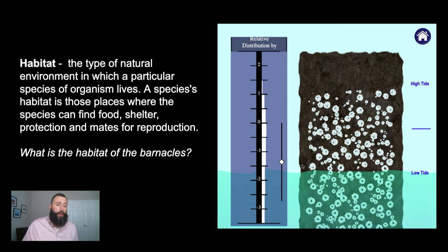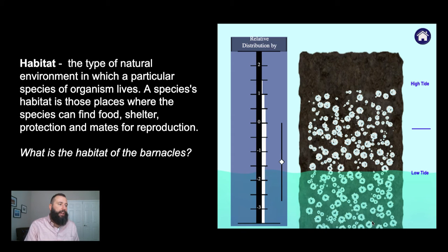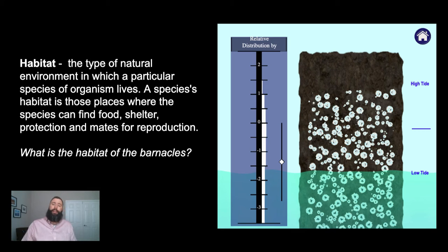The habitat for Thamelis, the white barnacle, allows them to hang out a little bit higher up in the high tide zone. Habitat is the type of natural environment in which a particular species or organism lives — where the species can find food, shelter, protection, and mates for reproduction. The habitat of the barnacles is this rock submerged in ocean water, at least partially. The habitat is a crude address of an organism — it's the place where it lives. The habitat for whales is oceans, for tigers is forests, and for earthworms is soil.